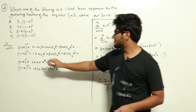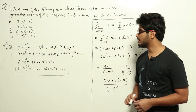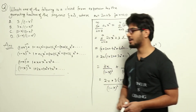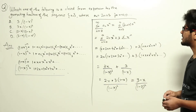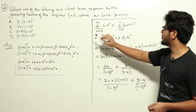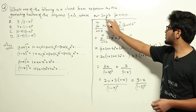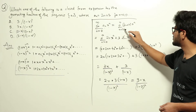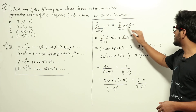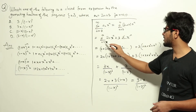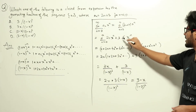Substituting n = 1 and n = 2 gives two expressions we need to know beforehand. Now, the closed form expression is given by sigma from n=0 to infinity of a_n · x^n. Since a_n = 2n+3, we rewrite it as the sum from n=0 to infinity of (2n+3)·x^n, which separates into sigma of 2n·x^n plus 3 times sigma of x^n.